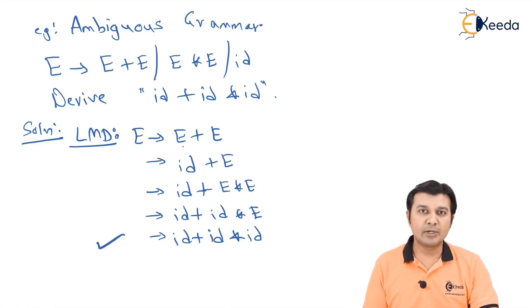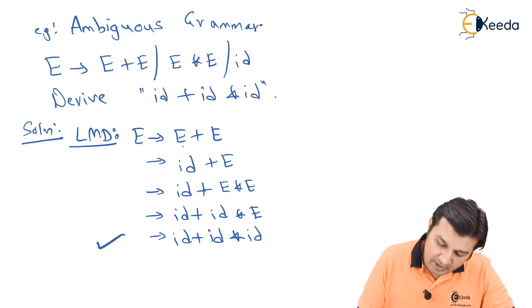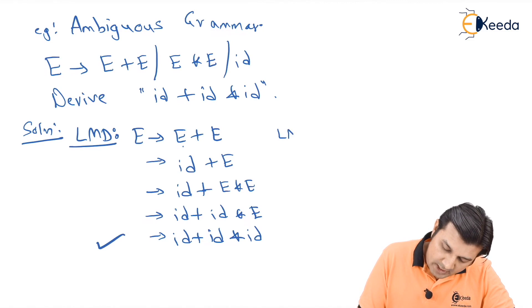We see that the string is generated using LMD. But as I told you, this is an example of ambiguous grammar, so the same string could be generated using more than one LMD.